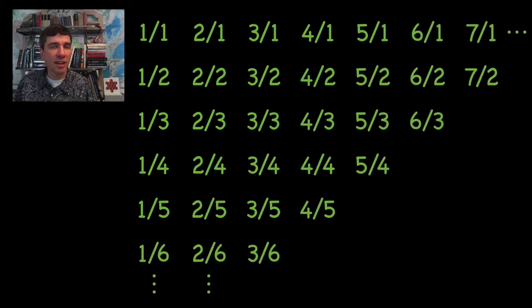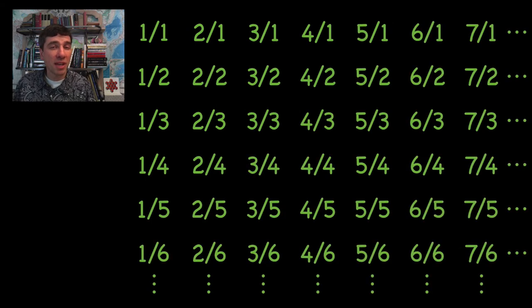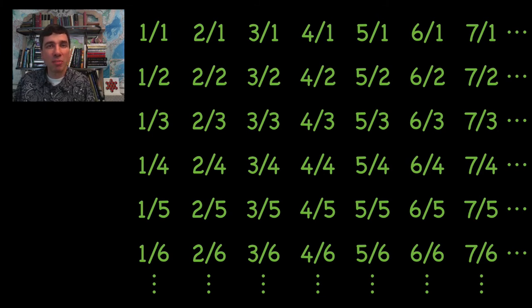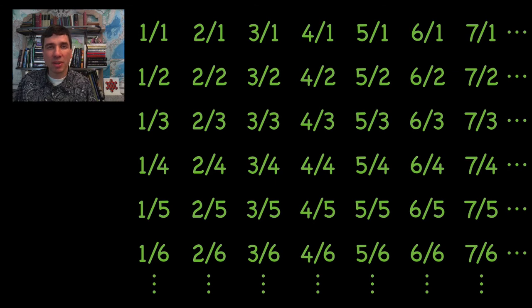Let's say that you wanted to list all of the fractions. You could do that. You could have the first column equal to one-over-one, then one-over-two, one-over-three, one-over-four, and so on. The second column you could start off two-over-one, two-over-two, two-over-three, two-over-four, and so on. You could list every possible fraction. But some fractions in there are dressed up. For example, do you see down there four-sixths? Well, that fraction is dressed up — we've already seen that fraction earlier in the table. It's two-thirds.